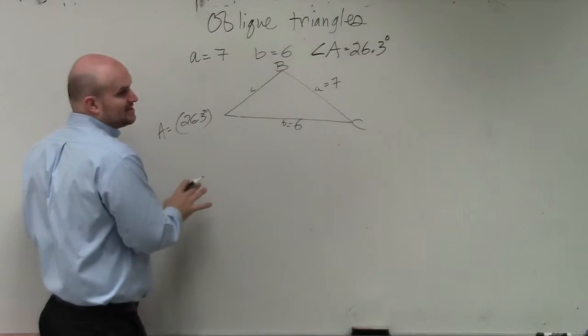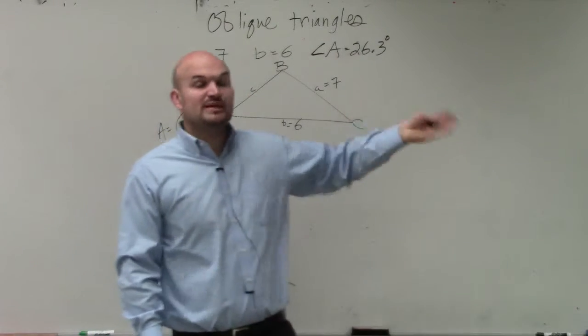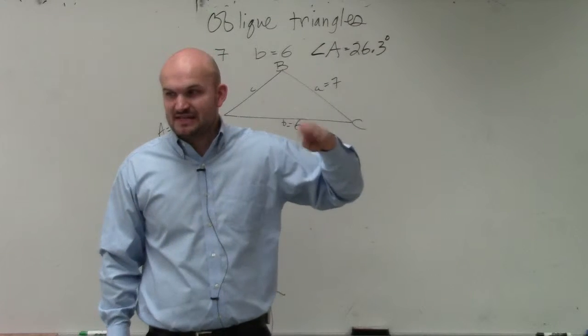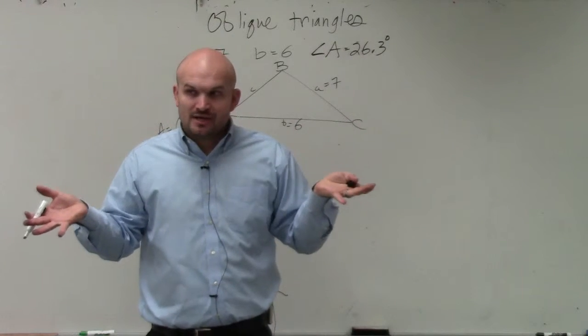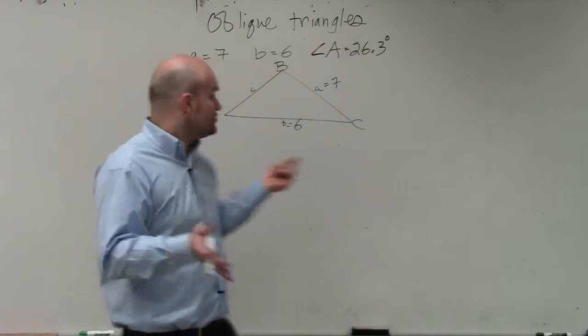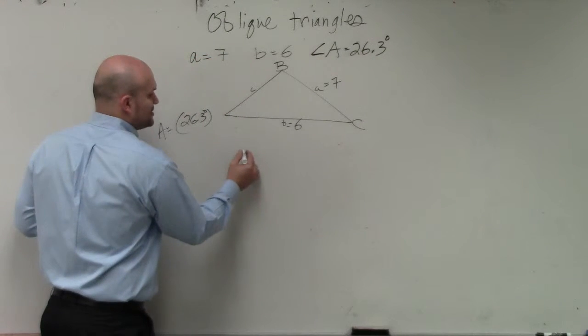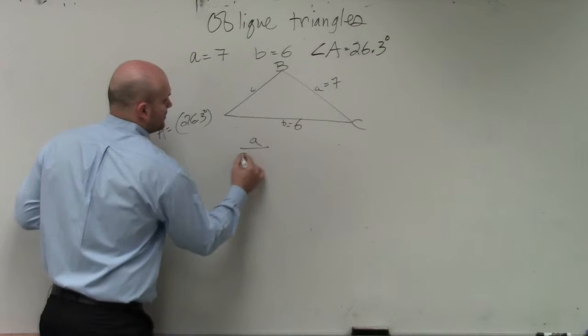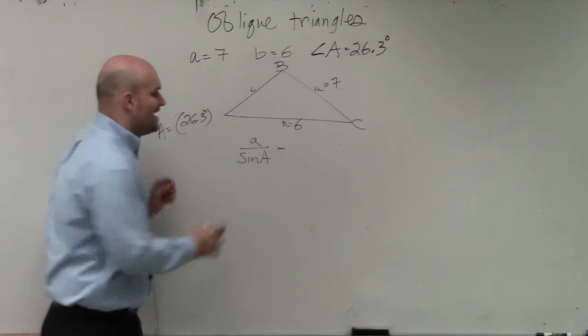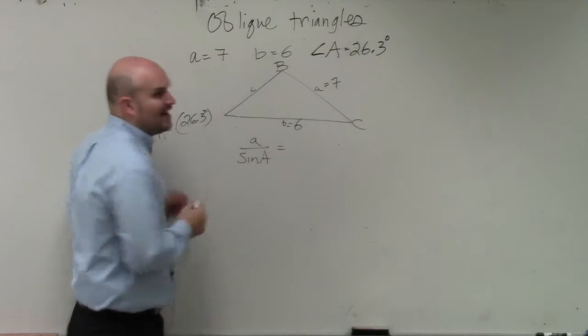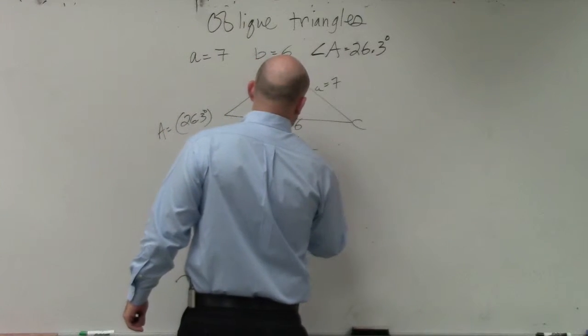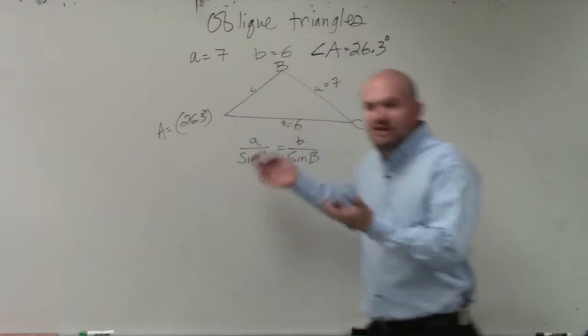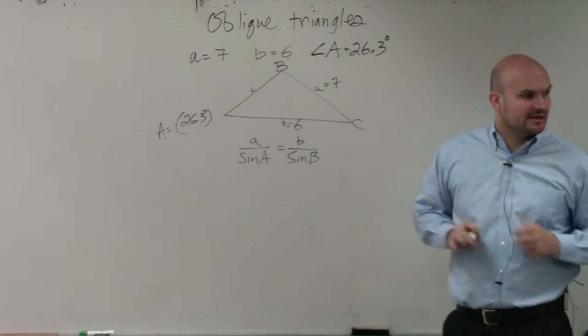So remember the law of sines was a over sine of A is equal to b over sine of B is equal to c over sine of C. We don't need every single one of these. We only need two ratios to write a proportion. So I'm obviously going to use my ratio of a over sine of A, and then I'm going to equate that to B over sine of B. I don't need to use the ratio for C. I can figure out C later.